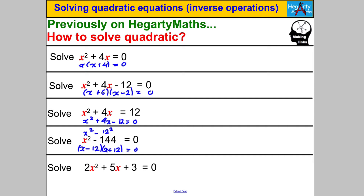The last one doesn't factorize easily — you have to factorize by grouping. Doing that gives you X = −3/2 and X = −1. That covers what we've done so far. Now there's one last case I need to show you.